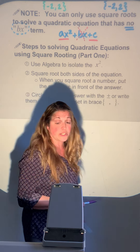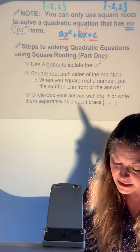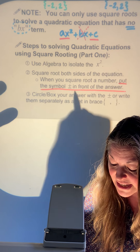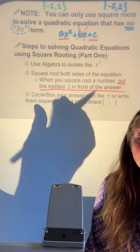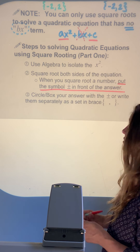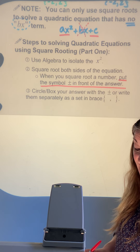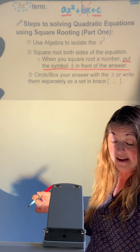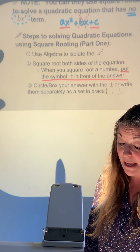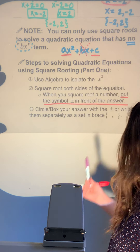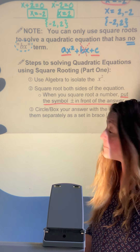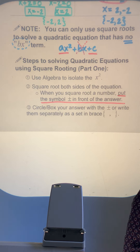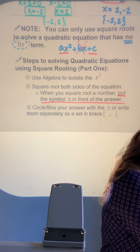The only difference is that when x is alone, it still has that square. So step two: officially square root both sides. When you square root a number, do not forget to put the plus or minus symbol in front — because there are two answers, the positive version and the negative version. You can circle it or write them separately in braces. Pause if you need time to write this down.